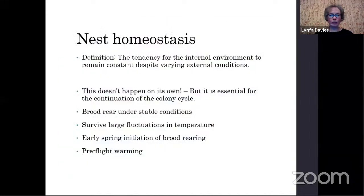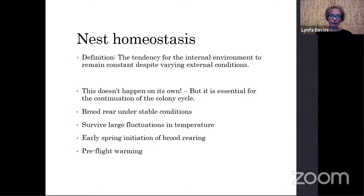Now I want to talk about nest homeostasis. The definition of homeostasis is the tendency for the internal environment to remain constant despite varying external conditions. This is really important, and bees are absolutely brilliant at doing this. What they do is maintain very stable conditions within the brood nest so they can rear their brood successfully. To do this, they have to regulate temperature, carbon dioxide levels, and humidity — and they do this very effectively.